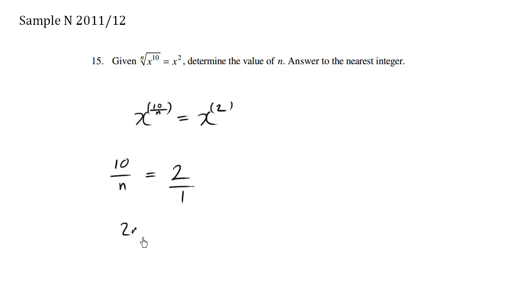This times this is 2n is equals to this times this, 10. We're going to divide both sides by 2 and the 2 is cancelled out. So we have n is equals to, and this becomes 5.